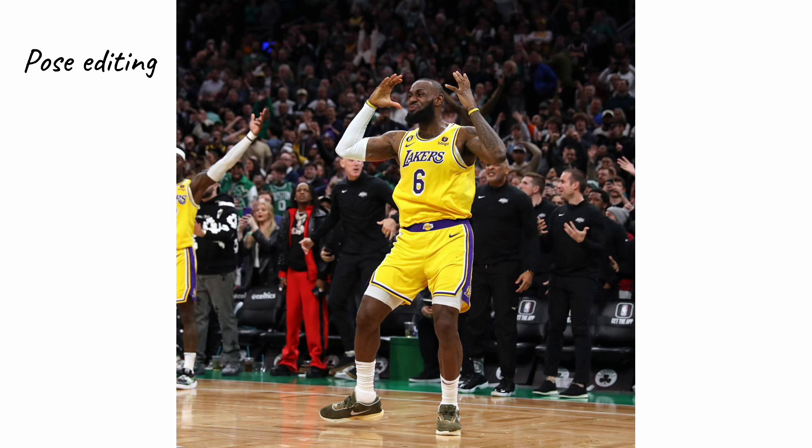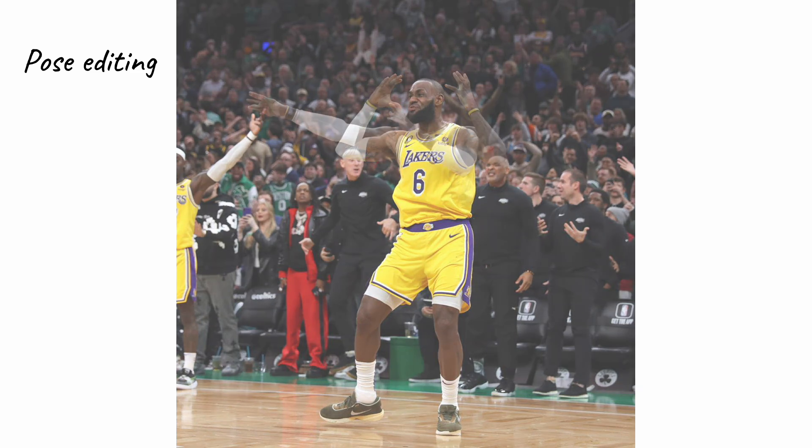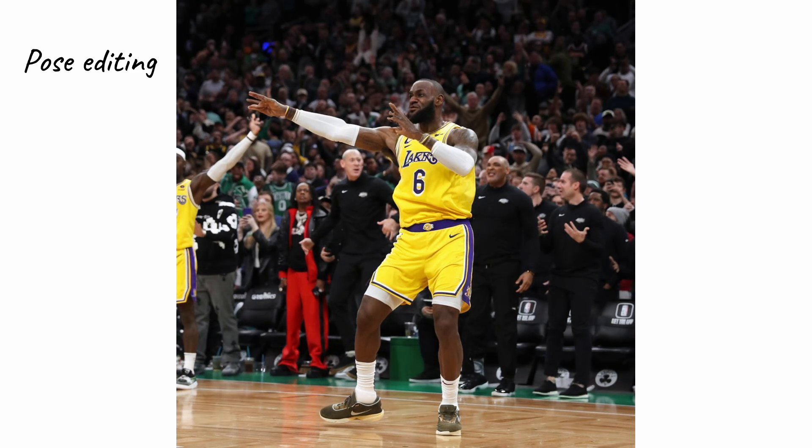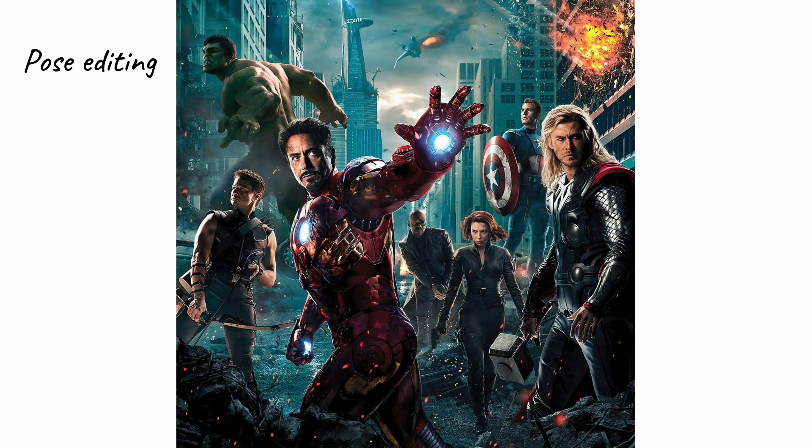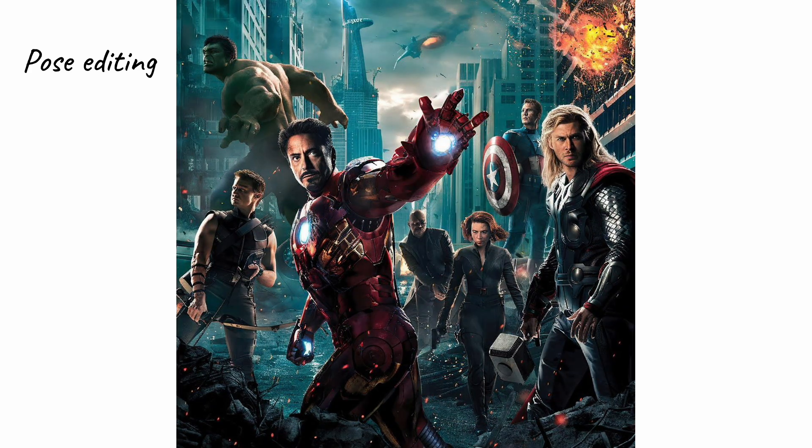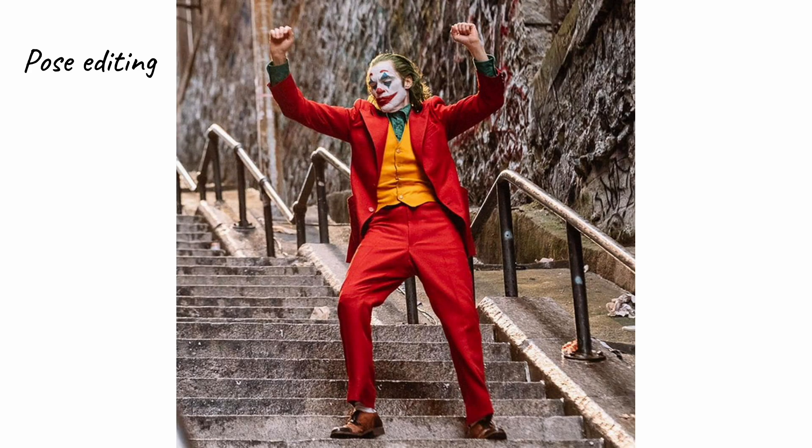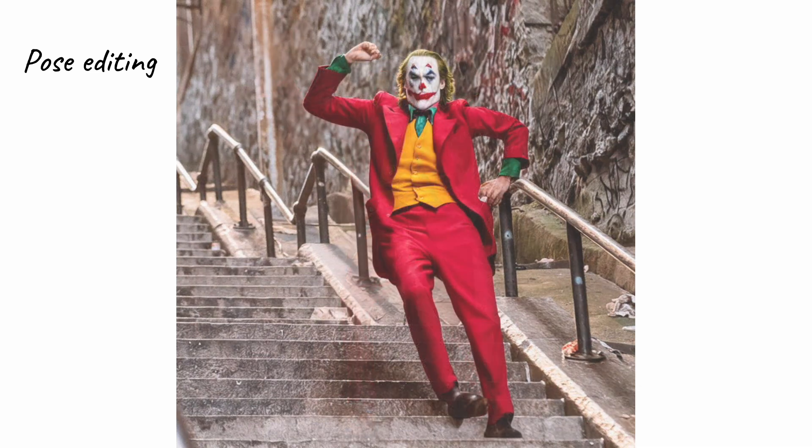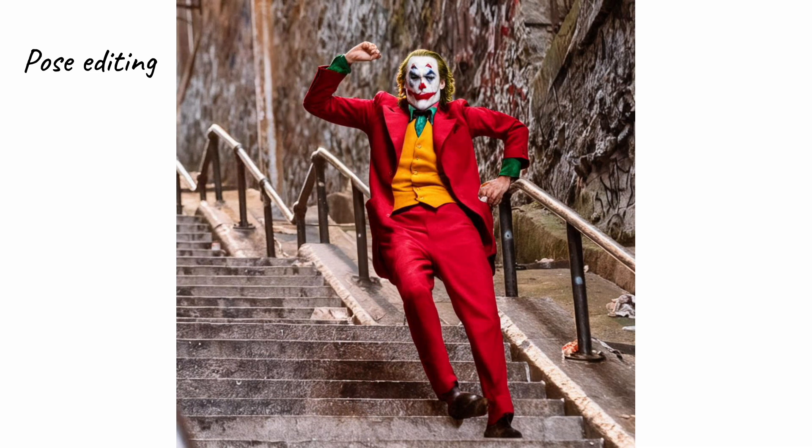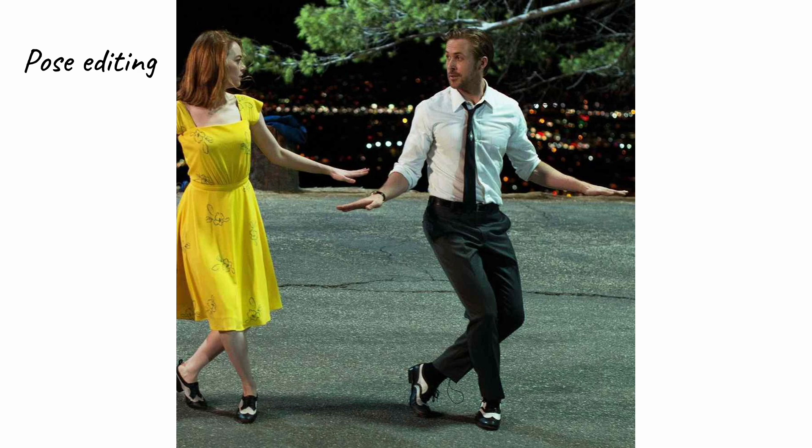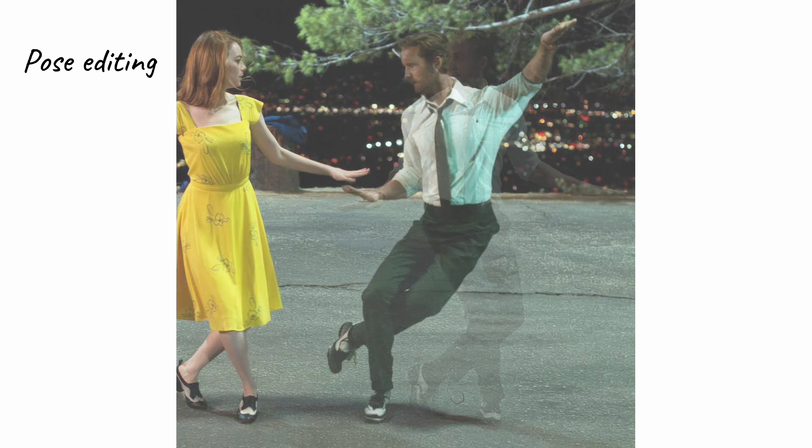Since we are editing in 3D space, we can do precise pose editing, such as adjusting the arm pose of LeBron James to a specific desired posture, or changing the pose of Iron Man to match that of Spider-Man. We can also modify the Joker's pose to depict him as if he has slipped down the staircase. Similarly, we could re-imagine Sebastian from the movie La La Land, dancing in a different style.